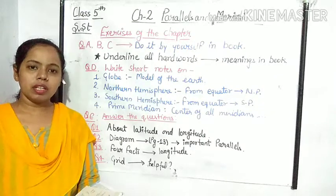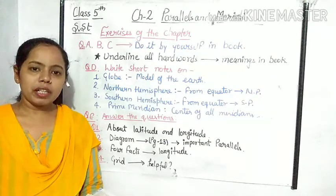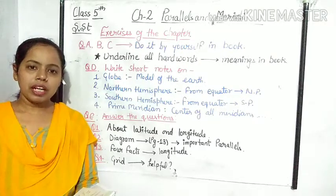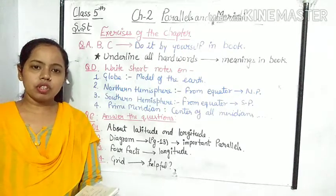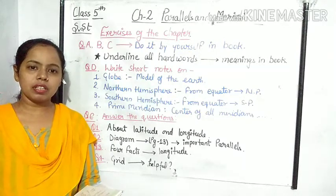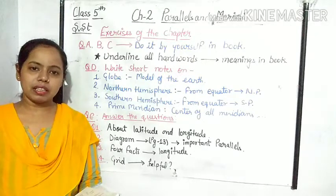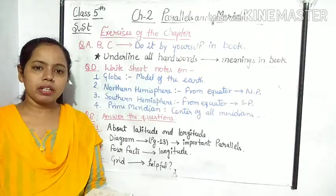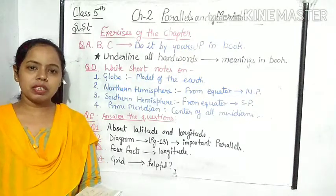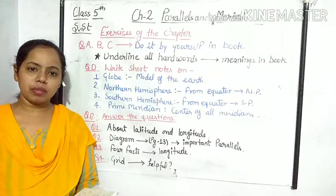Now come on to the next question. Here we all have to write about the grid and how the grid is helpful to us. As you know, the lines of longitude and the lines of latitude form a network, and this network is known as the grid. It helps us to locate or find out any place on the earth's surface.